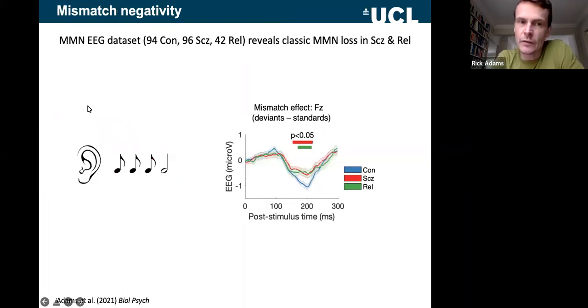In the mismatch negativity, we saw the classic finding illustrated by subtracting the response to these standards from the response to these deviants at this particular electrode FZ. And when you do that, it emphasizes this big negative deflection that you get in response to the deviants at around 200 milliseconds. And classically, this deflection is reduced in patients and in their relatives, as you can see here. This is probably the most well replicated finding in all of schizophrenia EEG.